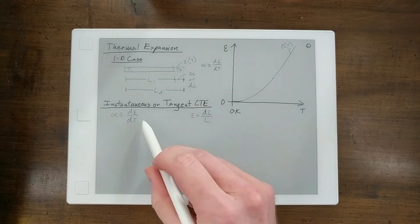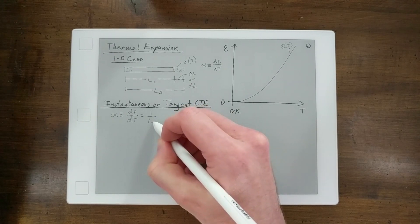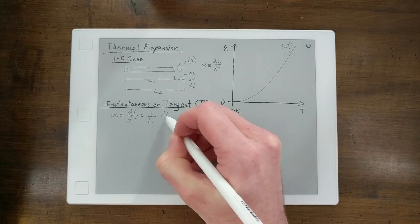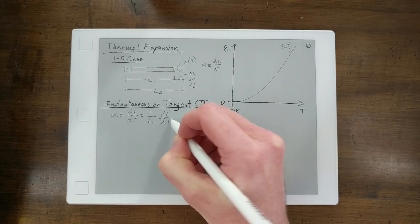And so if we plug that in there, we get one over L1 times DL DT.